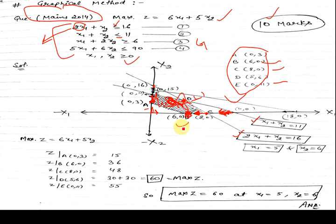Now, you just put this value of A, B, C, D, this is the required area, into this Z max and calculate the value of maximum Z. When you put point A, you get 15. In B, 36. In C, you get 48. In D, you get 60. In E, you get 55. Hence, we are required to calculate the maximum Z, and the maximum Z occurs at D point.